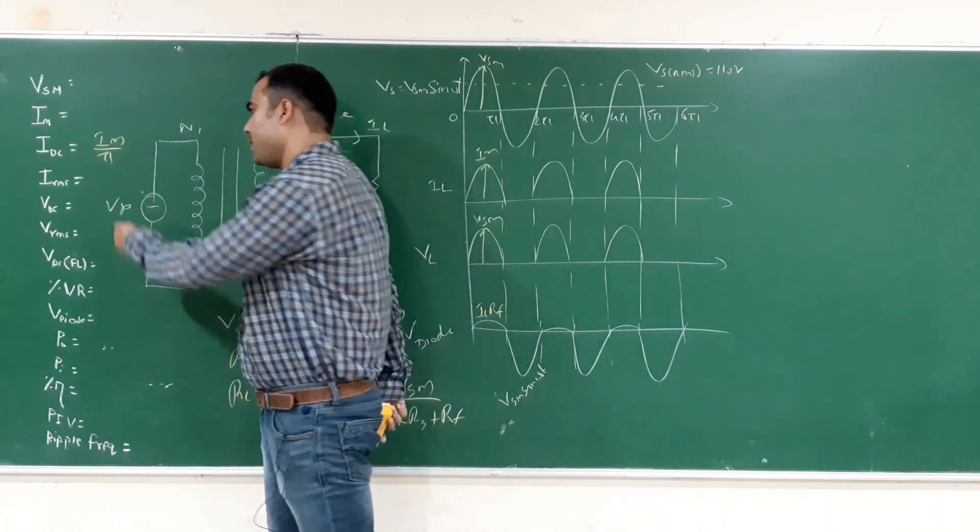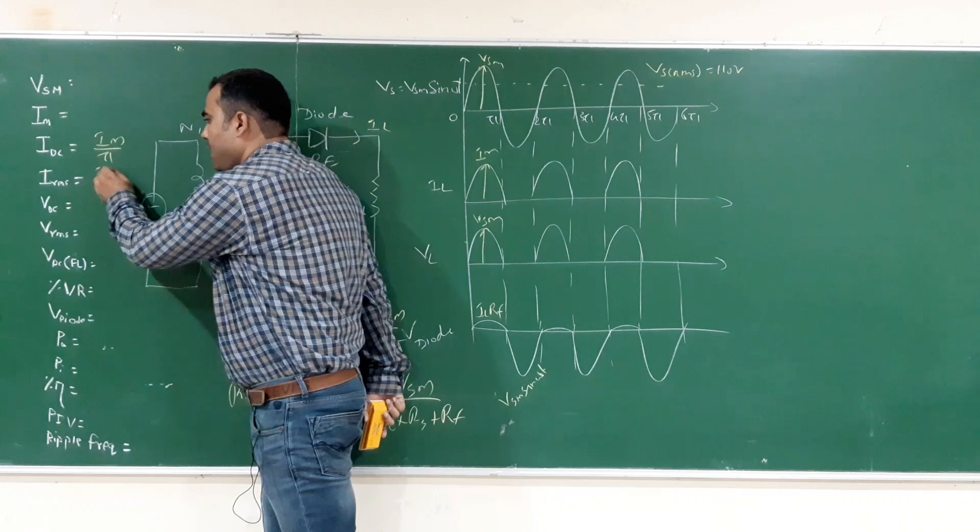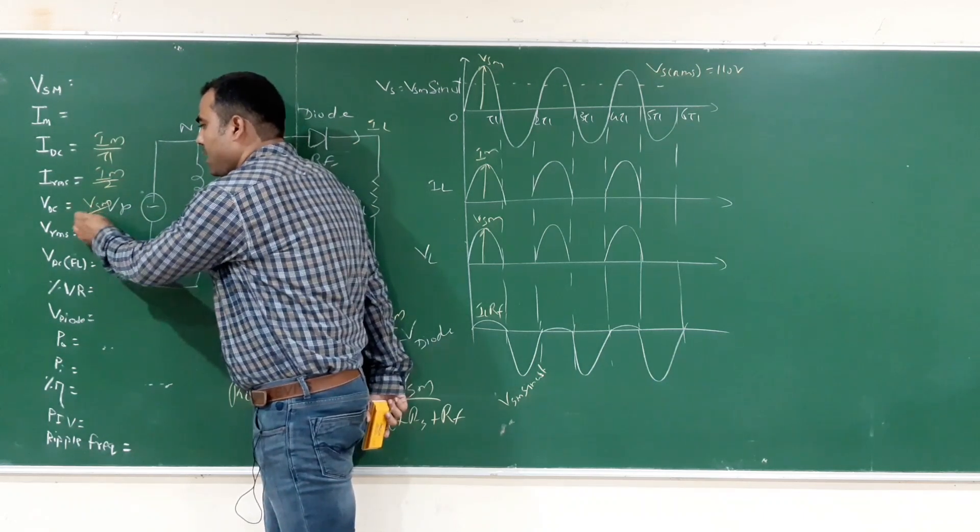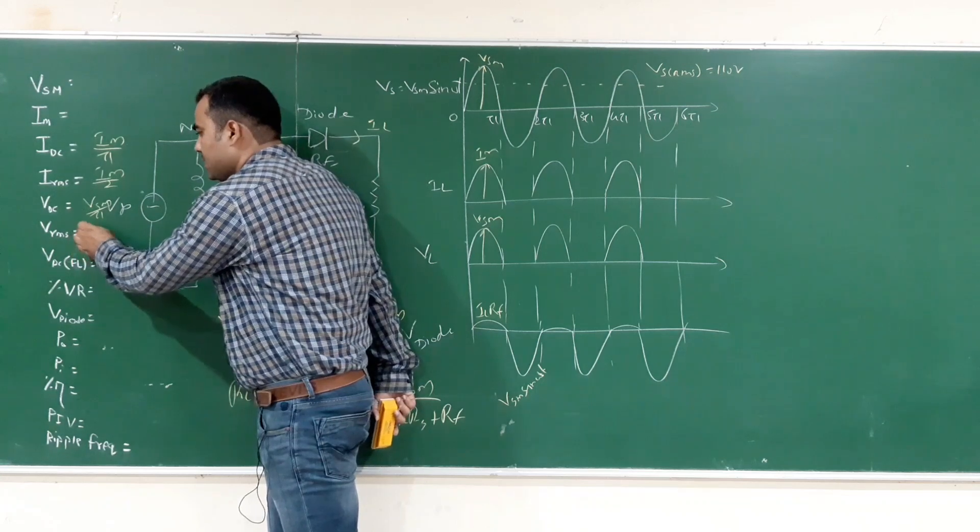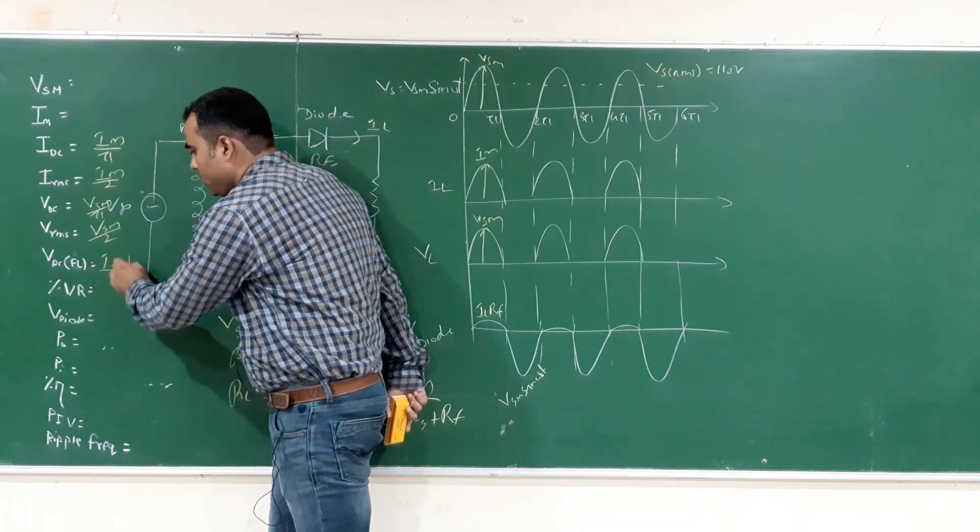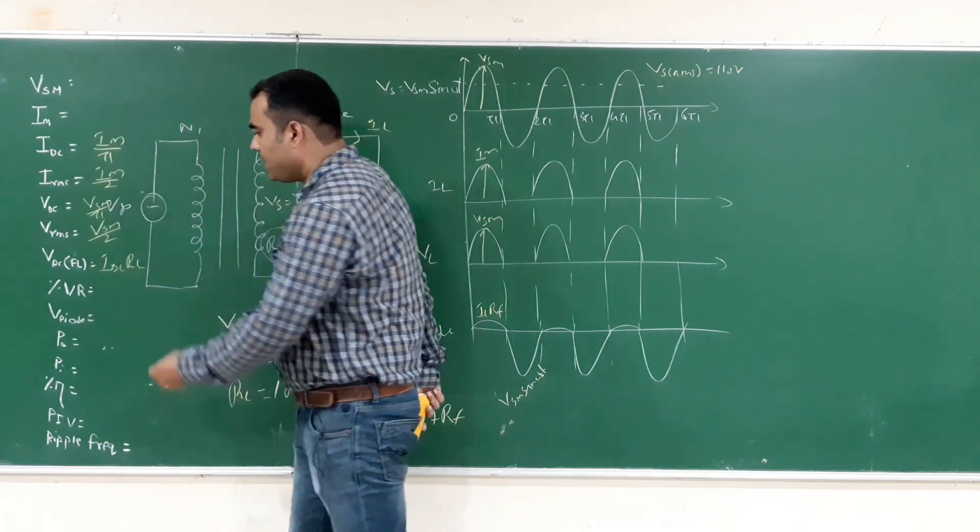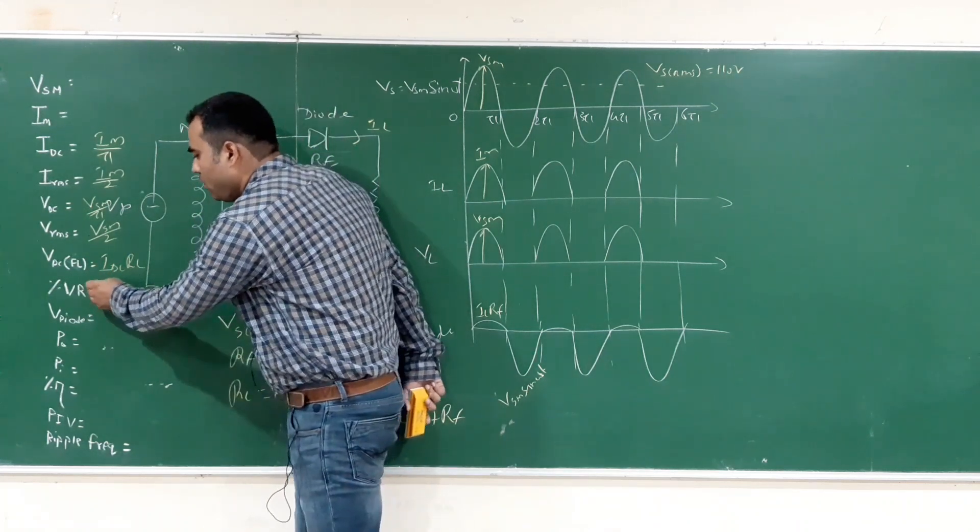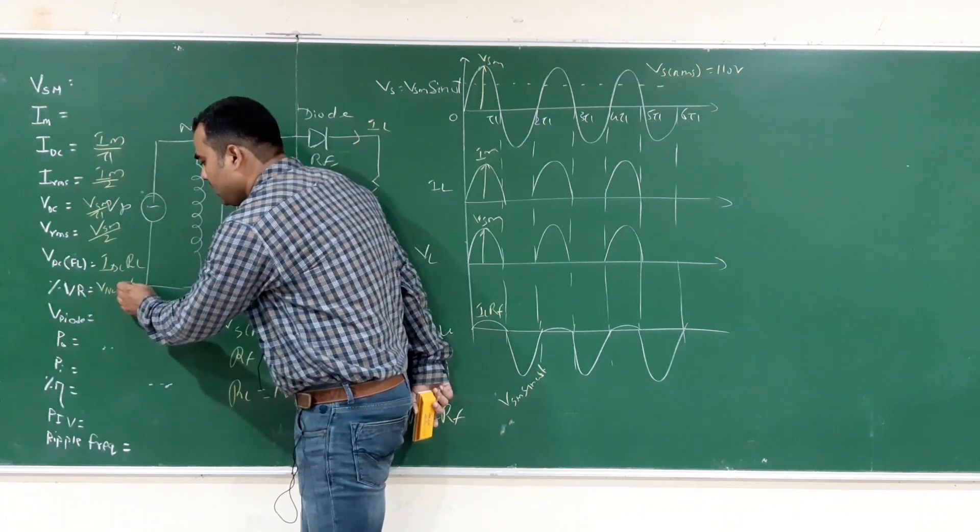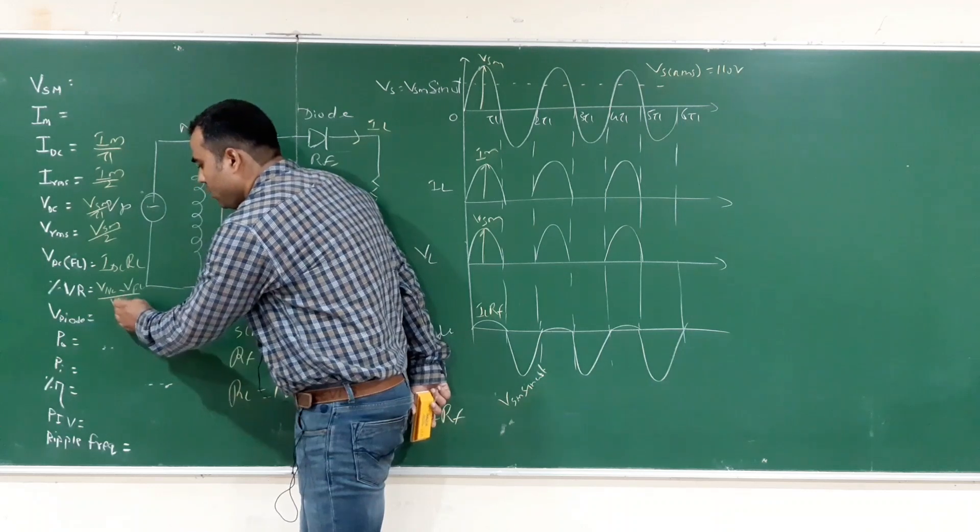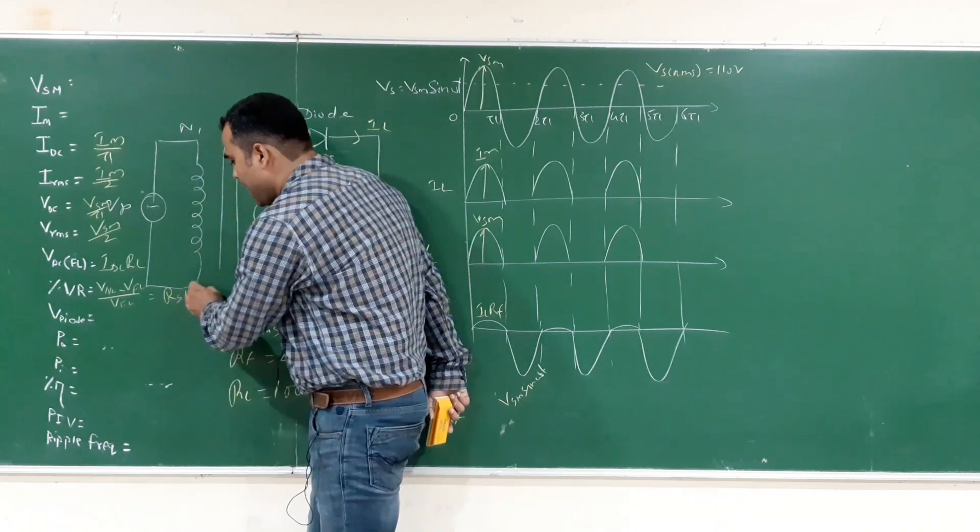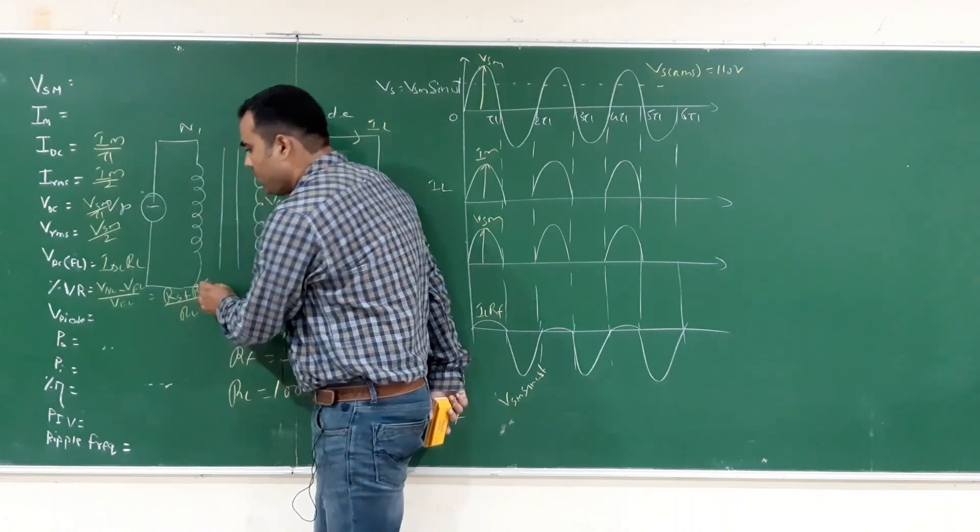Next to calculate IDC, formula is IM by pi. Next, to calculate IRMS, formula is IM by 2. To calculate VDC, Vsm by pi. VRMS is Vsm by 2. VDC full load is IDC into RL. Percentage regulation is VDC no load minus VDC full load divided by VDC full load. Solving in terms of resistance we get RS plus RF upon RL into 100.